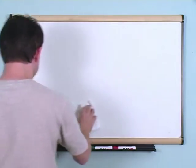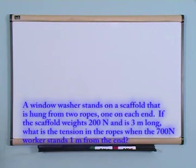So, first problem is you have a window washer on scaffolding supported by a rope at each end. Scaffold weighs 200 newtons, it's three meters long. What is the tension?